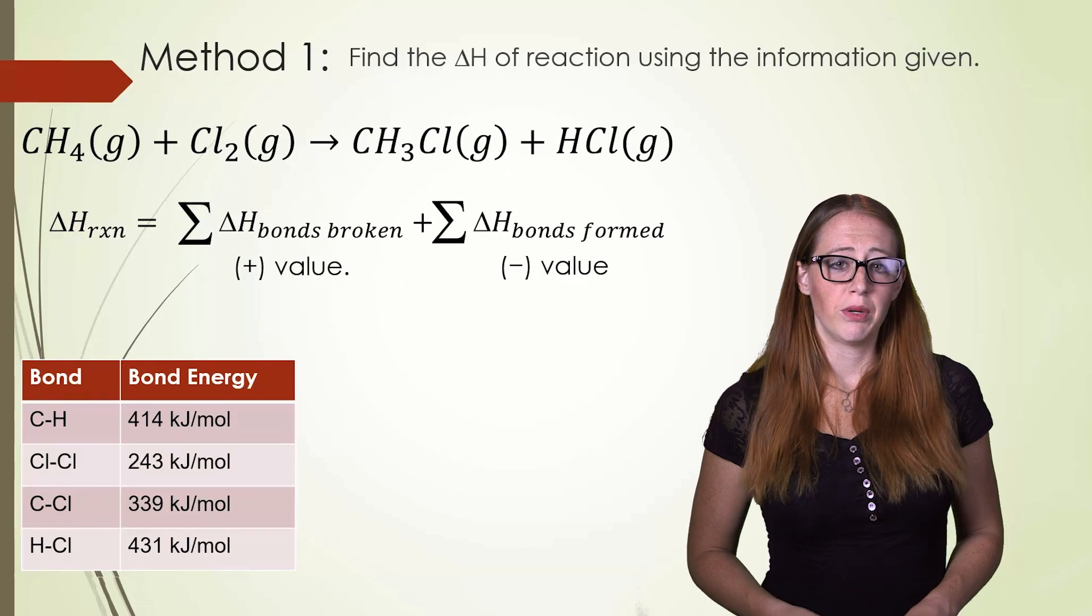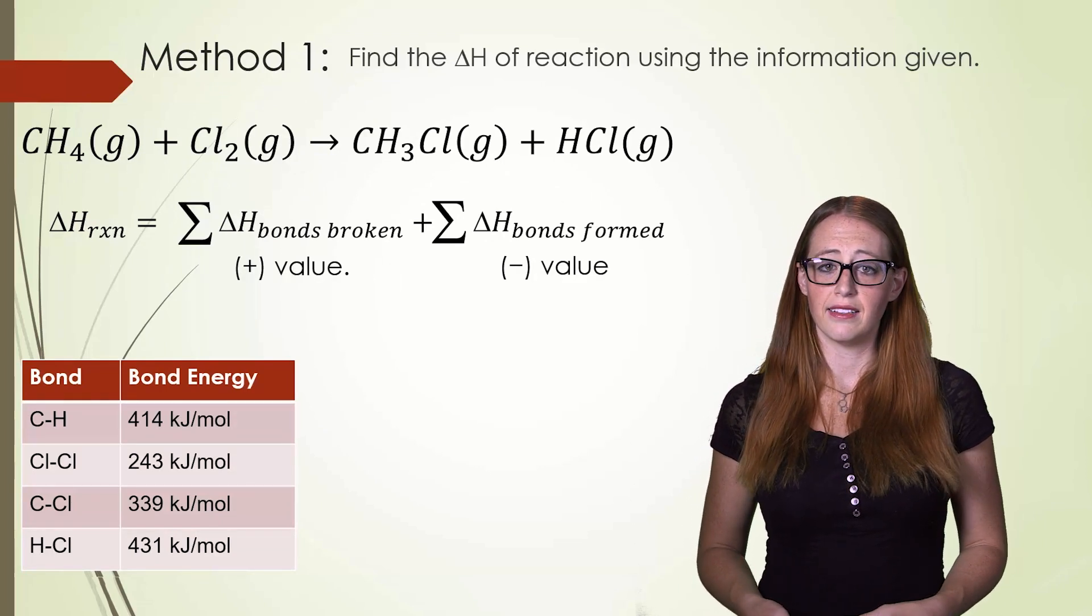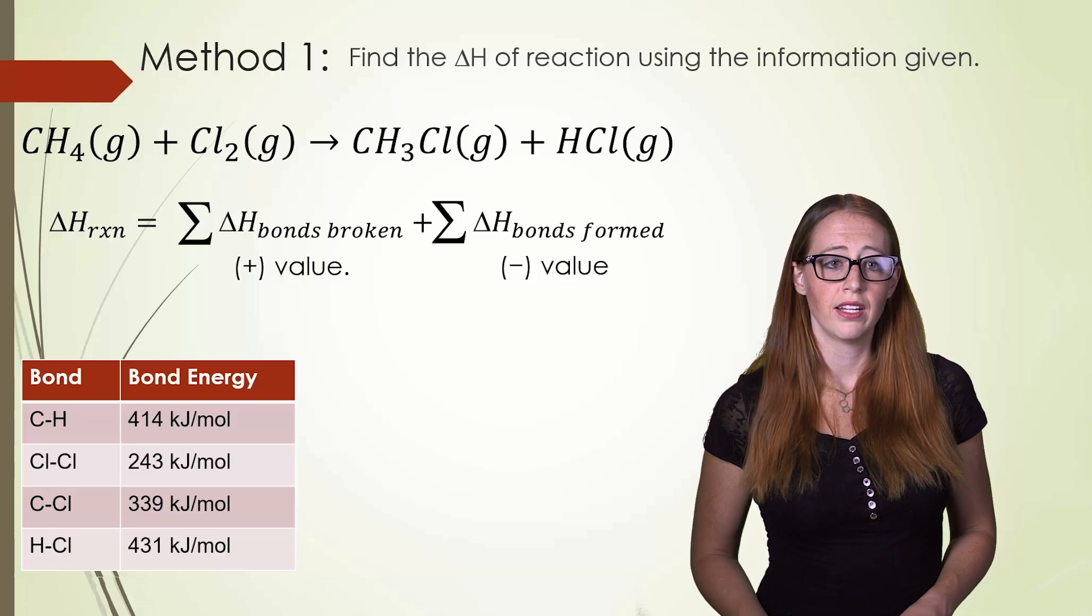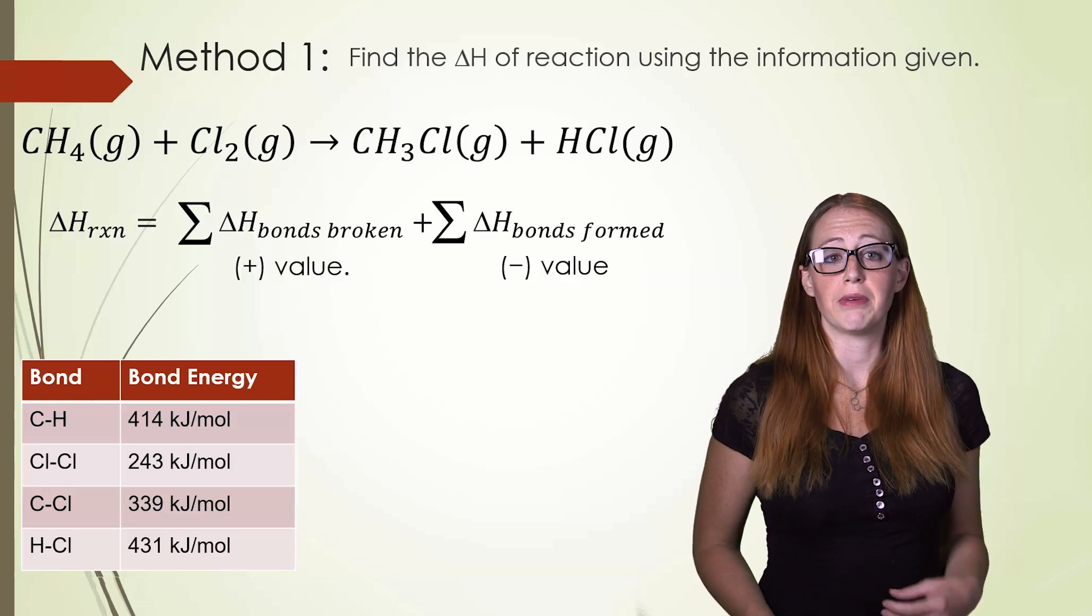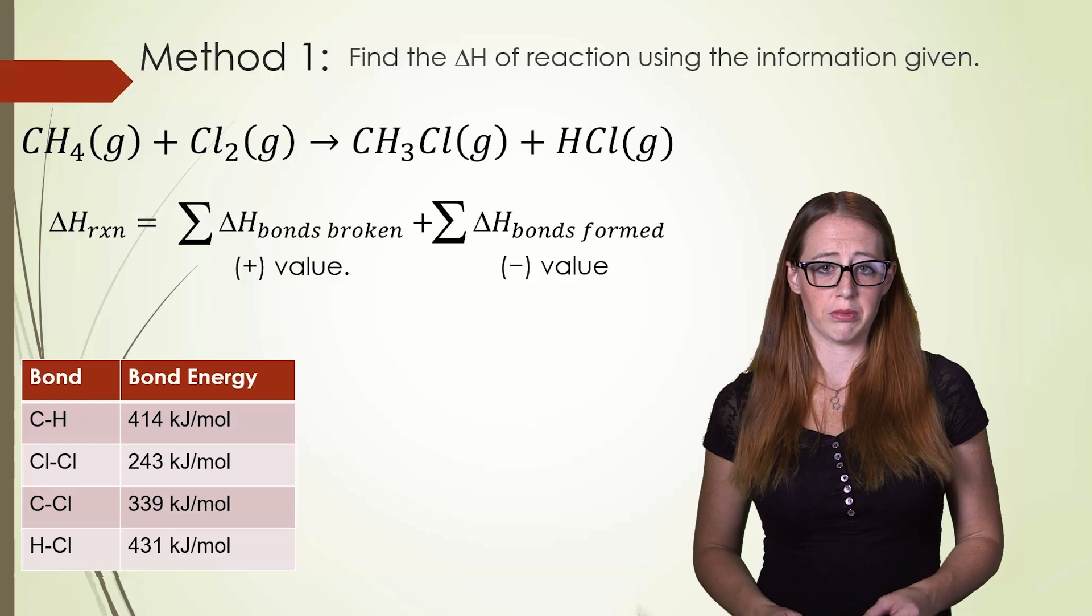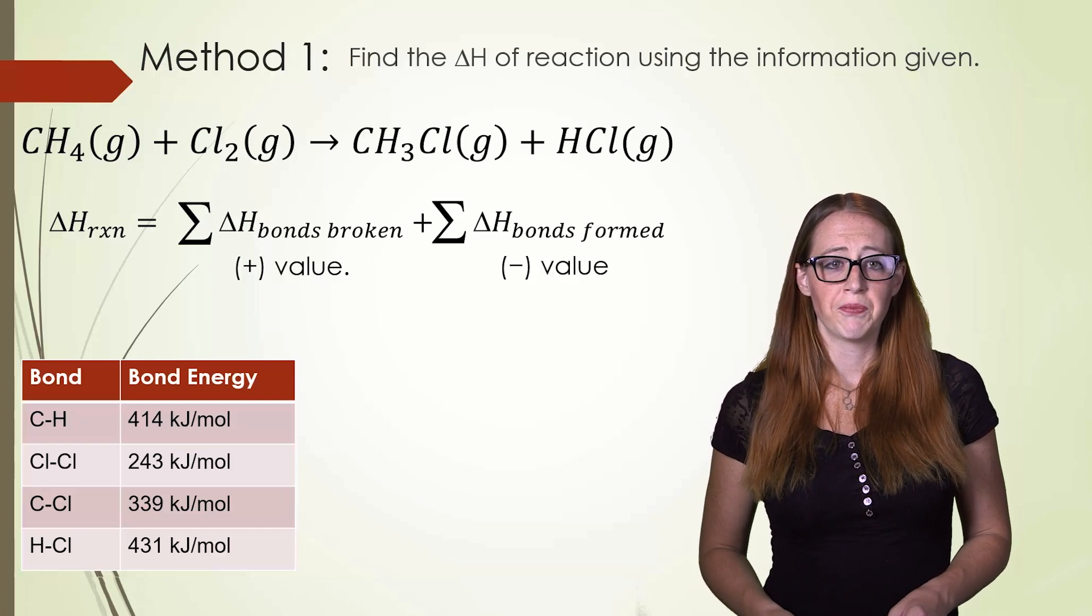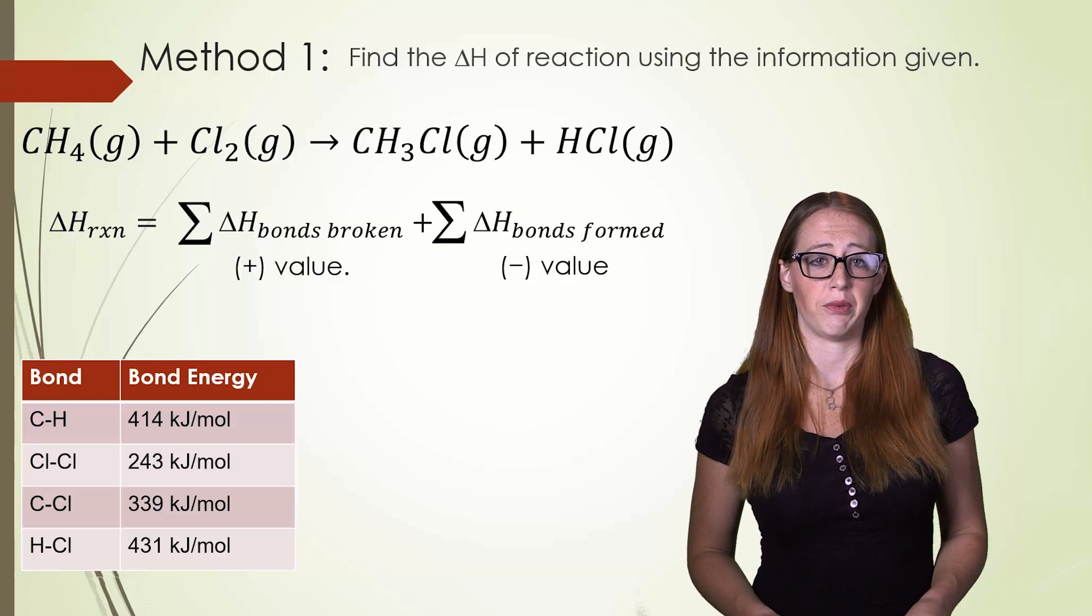Here we have an example where methane is reacting with chlorine. We form CH3Cl and HCl from this reaction. Now notice I also gave you a table. These have all the values that you might need to solve this problem. Take a moment and pause before moving on and figure out what bonds are broken and which ones are formed.